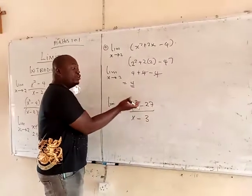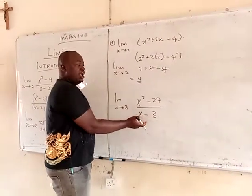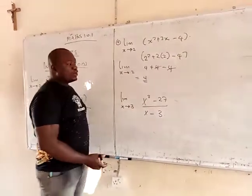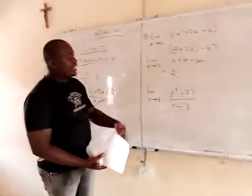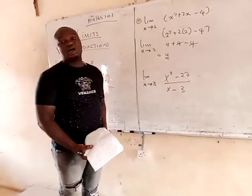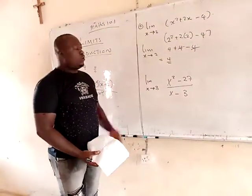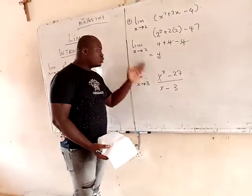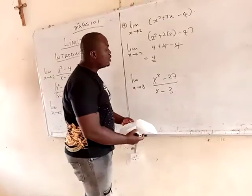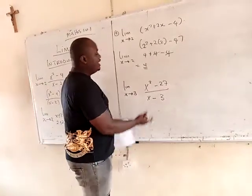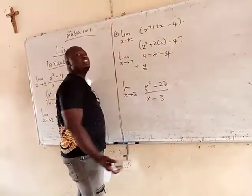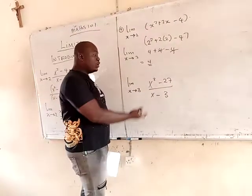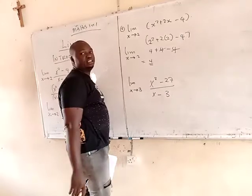We already have a numerator and denominator. And if you can see from here, you can also see that we can factorize out. Whenever you have a problem like this, please concentrate on trying to eliminate the denominator — if it's possible — or simplify it.